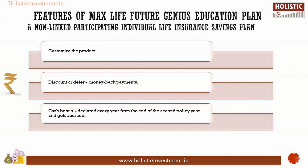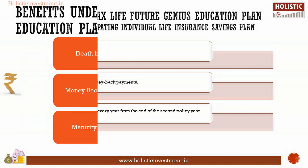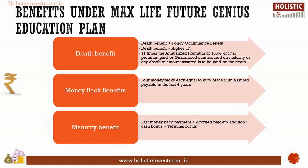Max Life Future Genius Education Plan is a non-linked participating individual life insurance savings plan. The main features are: freedom to choose your own policy term and customize the product, flexibility to discount or defer the money back payment. The cash bonus will be declared every year from the end of the second policy year and gets accrued.